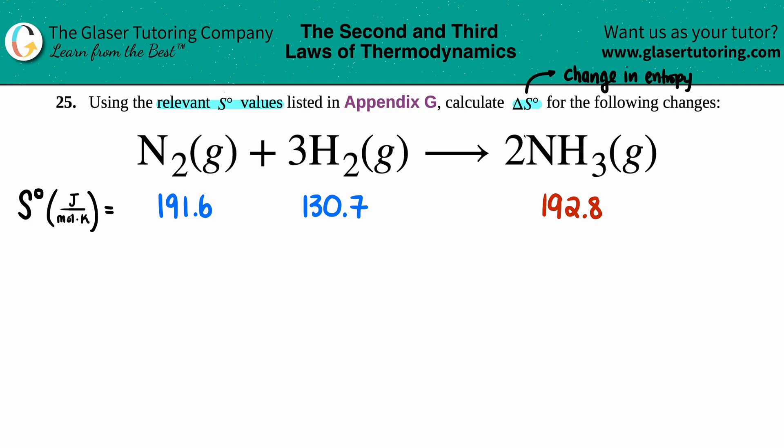This naught, this little degree sign, just means that we have to be under standard conditions. That's why we have to go to the back of a textbook. So I went to the back of the textbook to find out what those standard entropy values are: for N2 which is 191.6, H2 which is 130.7, and NH3 which is 192.8.